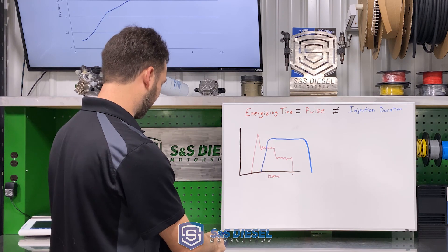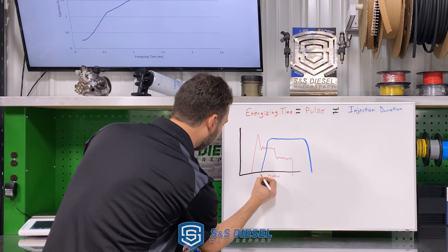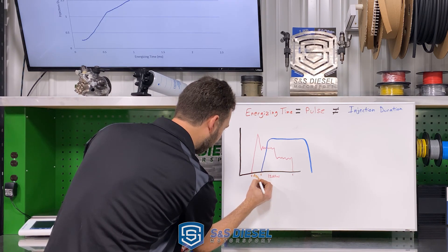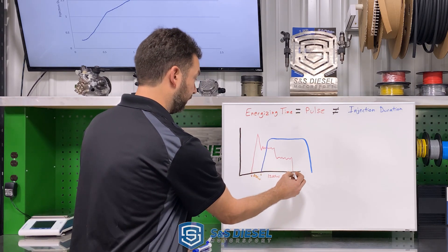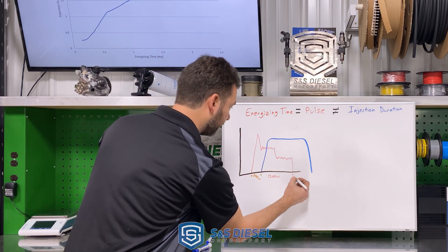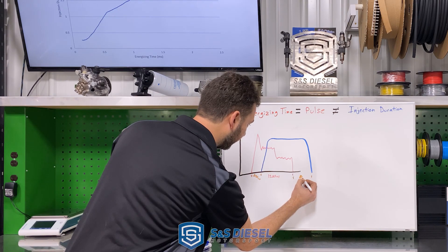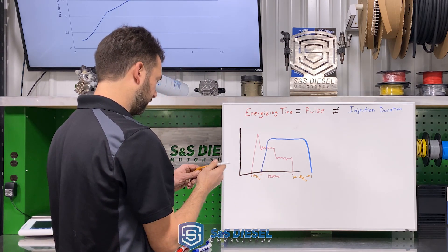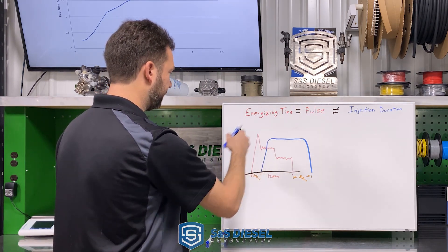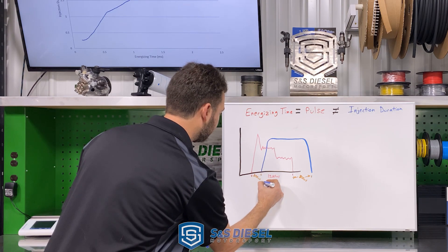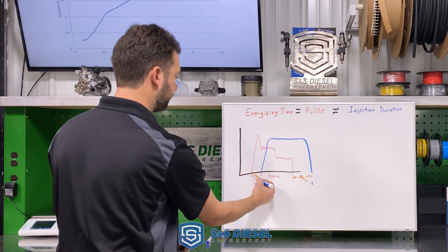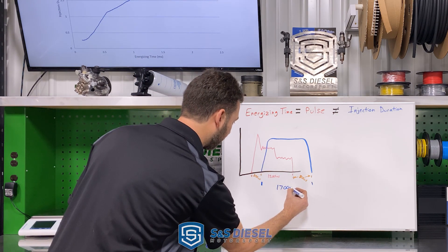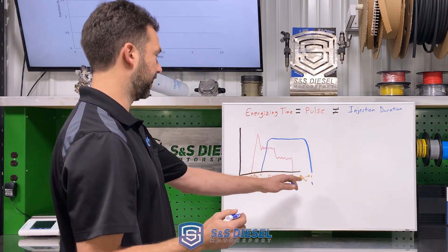So you see that we have a delay in the beginning here. From our start of energizing to start of injection, we have about 300 microseconds of delay. From our end of energizing to our end of injection, we have roughly 800 microsecond delay. So for our actual injection duration with that energizing time, it puts you at 1,200 minus 300 microseconds plus 800, so 1,700 microseconds of actual injection duration.